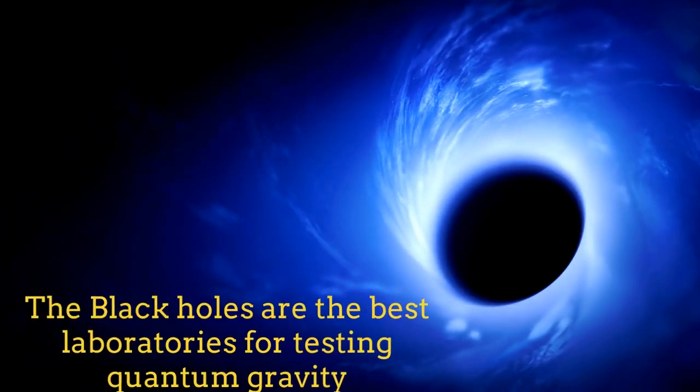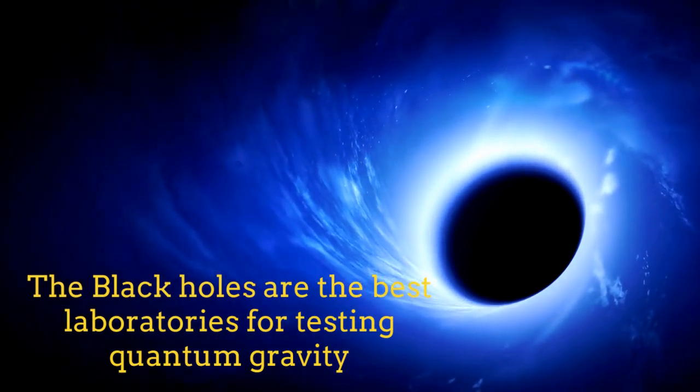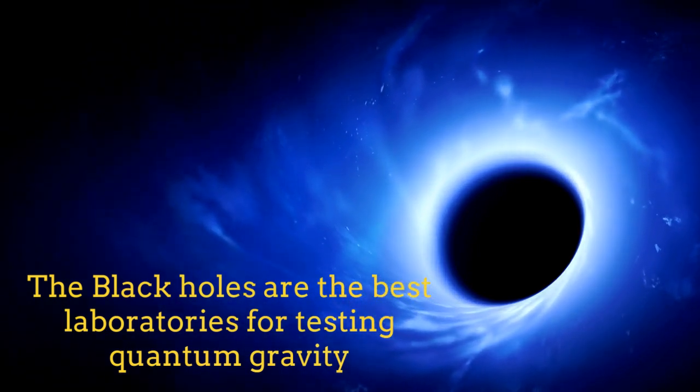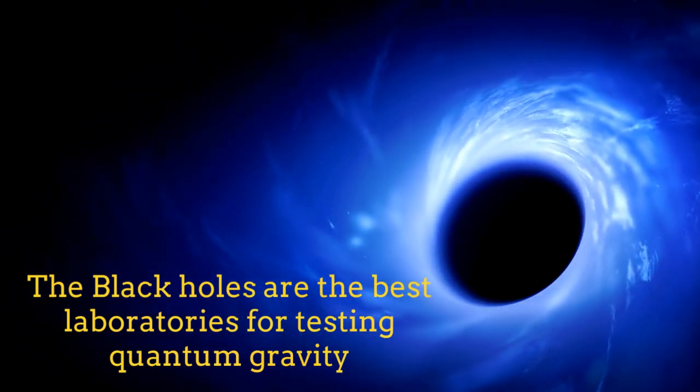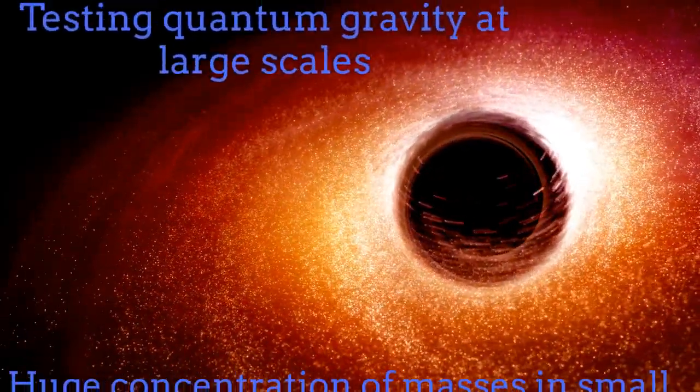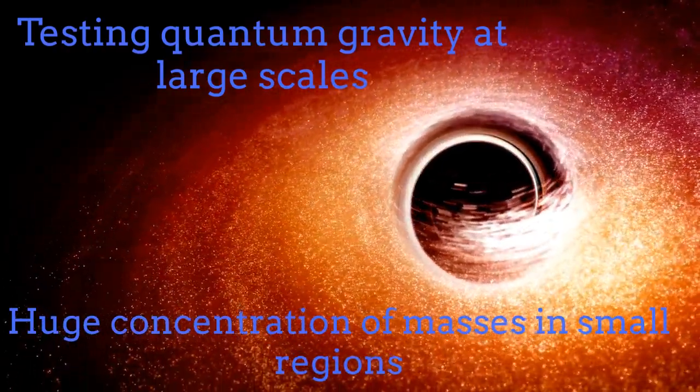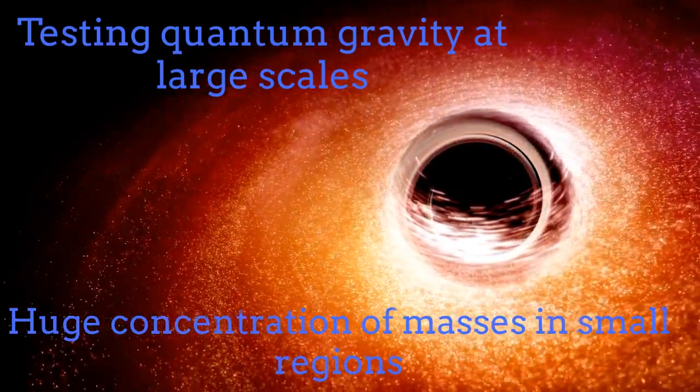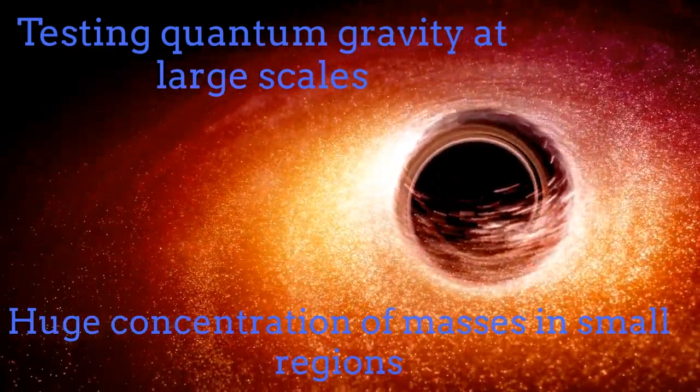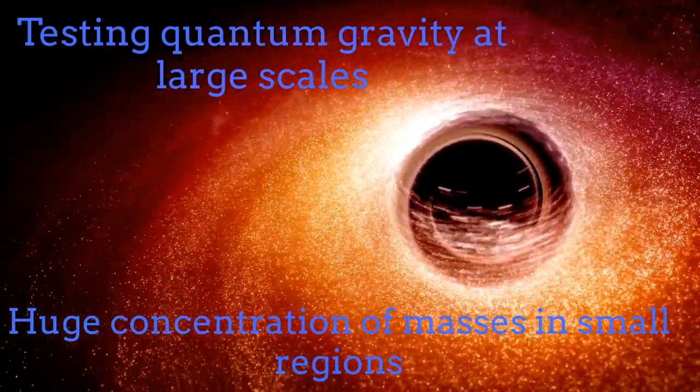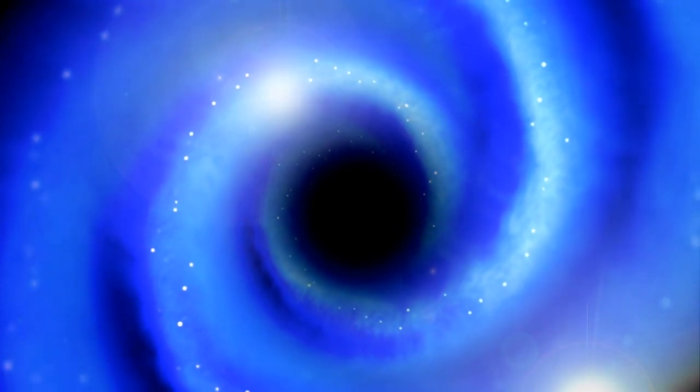However, there are other ways to test the quantum gravitational effects without reaching the Planck length. One way is by analyzing and testing the black hole physics. In fact, the black holes are the best laboratories for testing the quantum gravitational effects, given the fact that such effects might appear in the neighborhood of the event horizon of the black hole. This is the case because near the event horizon, the gravitational field comes out to be very strong. Extremely strong gravitational field, and in particular huge concentrations of masses in small regions, give us the ideal conditions for investigating quantum gravitational effects. The black holes satisfy by far these conditions.